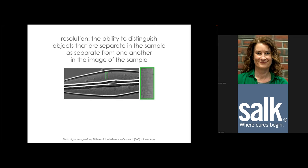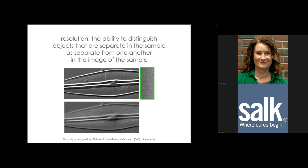When we zoom in on the diatom, we can see some structure, but by increasing the resolution of the microscope through optical changes, we can now resolve the regular structure clearly. This is why resolution is critical — we can absolutely fail to see things that are actually there in your specimen.